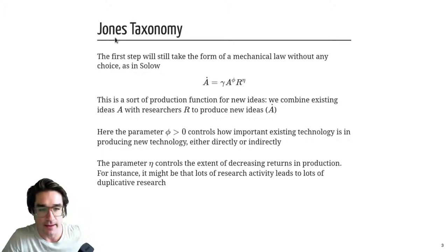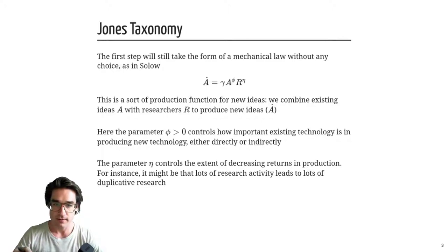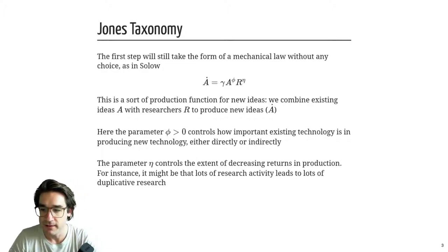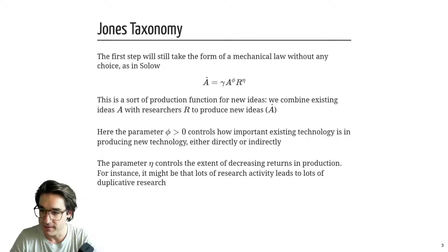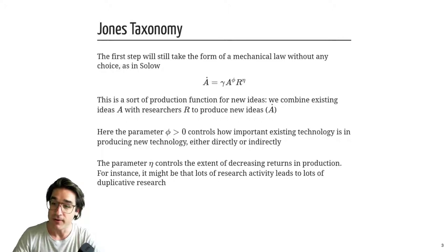φ (phi) and η (eta) control the importance of each input. φ controls how important existing technology is in making new technology. You need to go in an order — if you want to invent calculus, you need to know basic math first; if you want special relativity, you need calculus. Things need to go in order and you build on what came before.